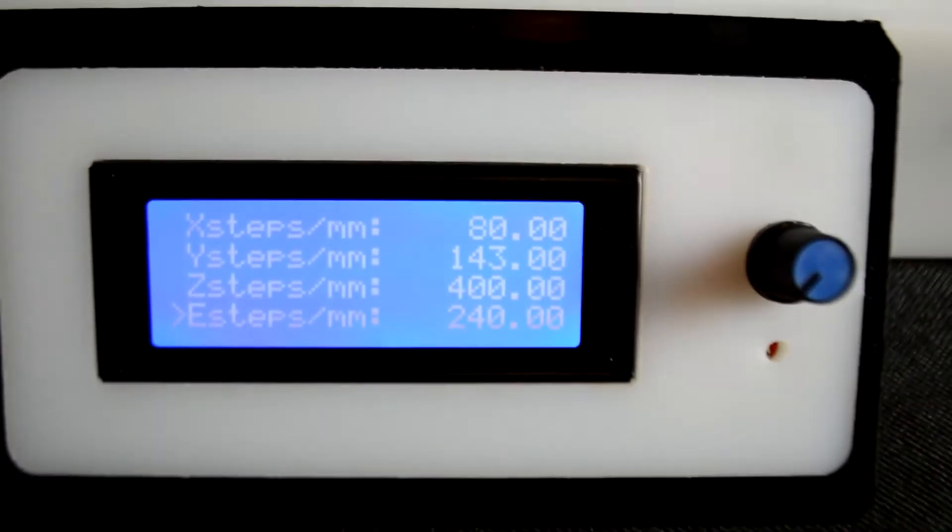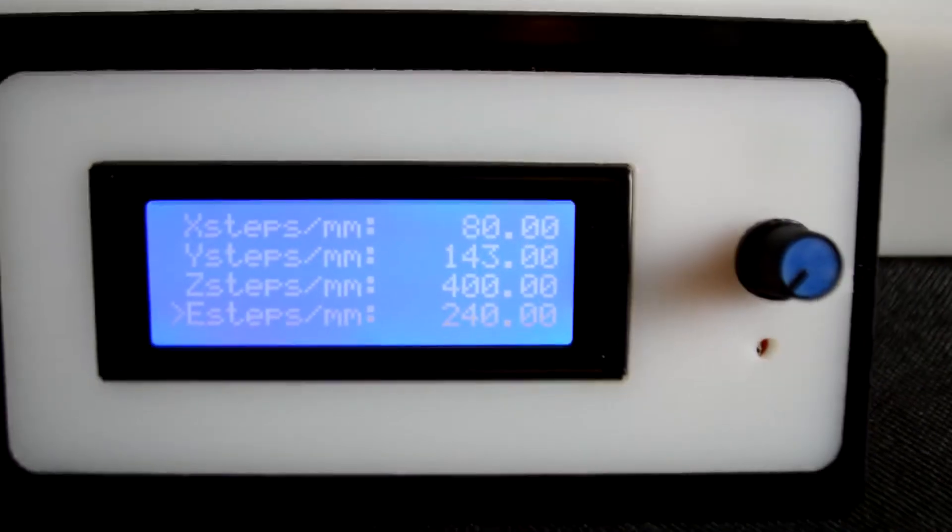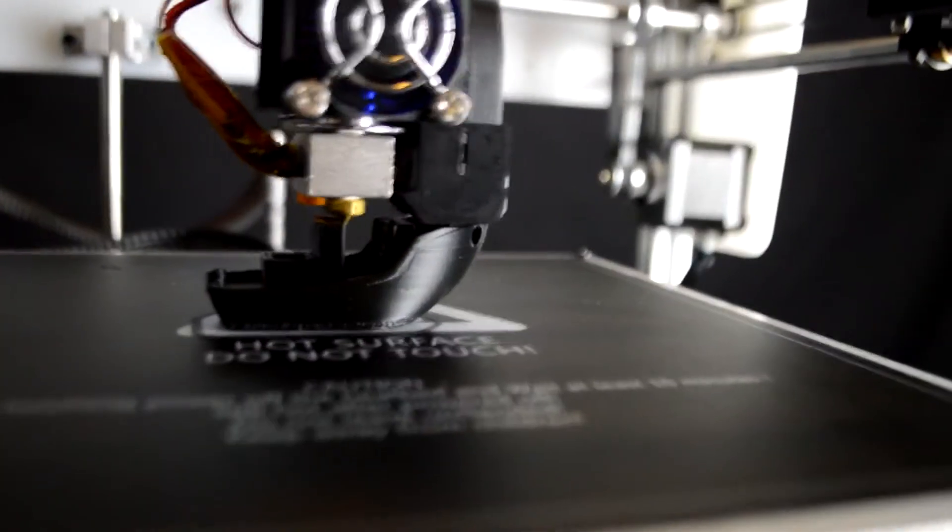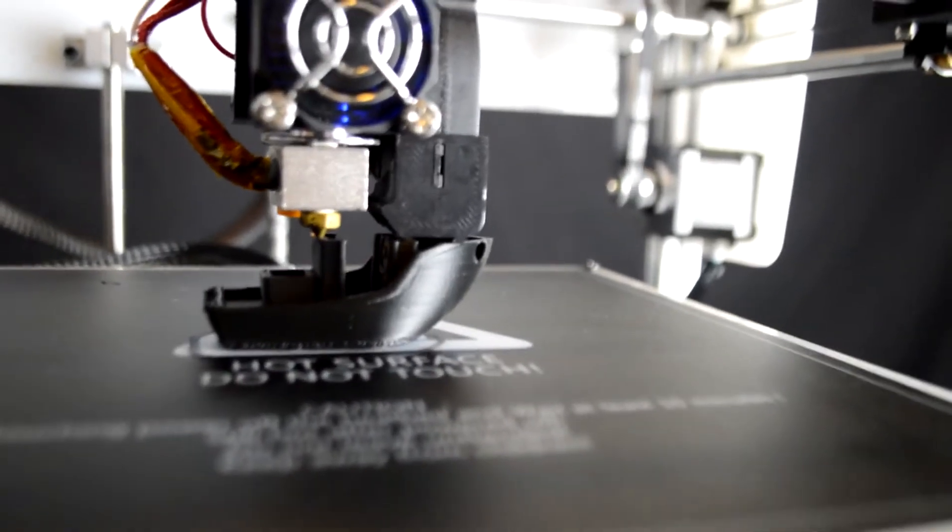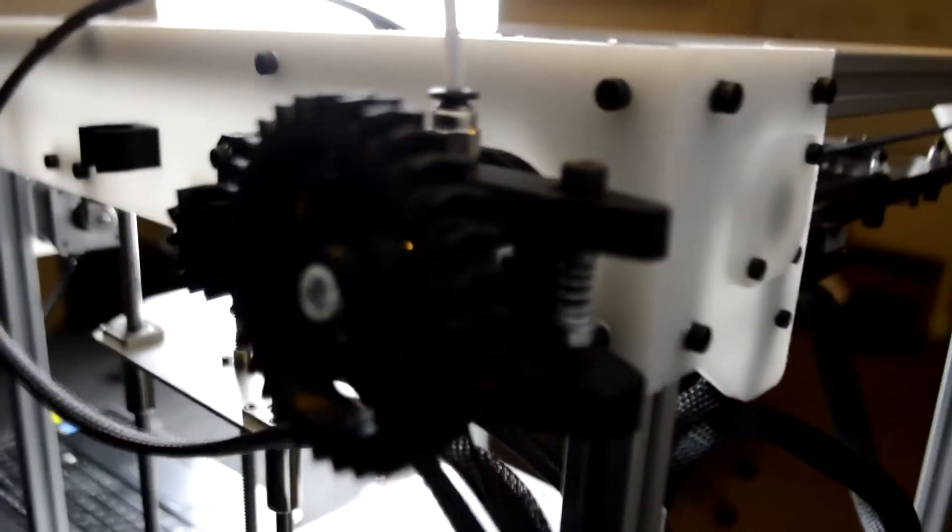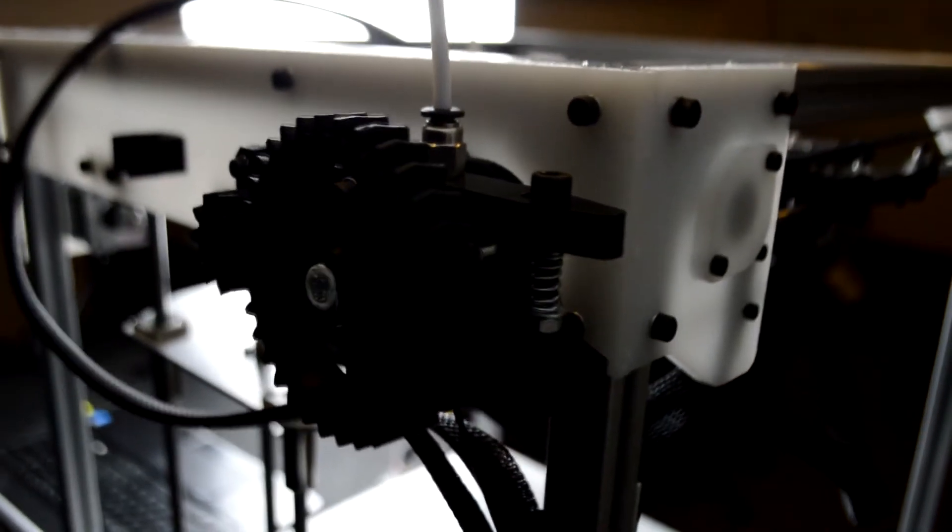So yeah, my E-steps are 240 and I'm getting a pretty much flawless print. Key things to watch out for on the extruder though.